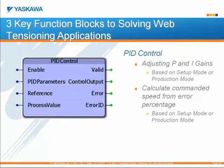The PID control function block is used to adjust gains based on setup of machines. A system can have two modes: a setup mode where tension is built up for running a machine, and a production mode where tension is maintained while running. This function block is handy for tuning — it can be added to the watch window and monitored, and different sets of gains can be loaded in depending on the system.